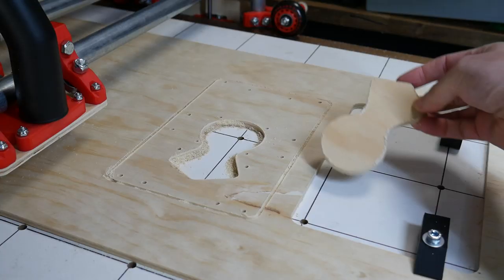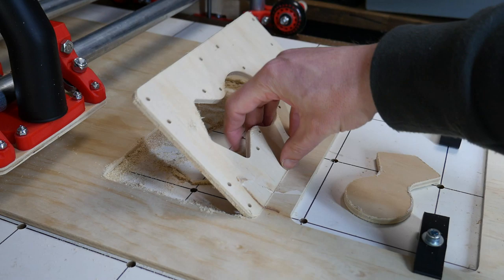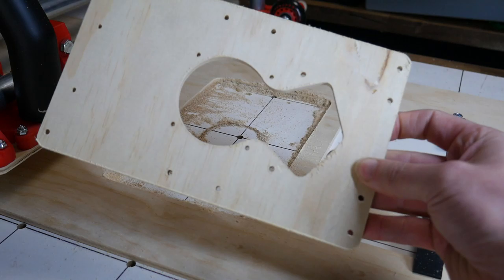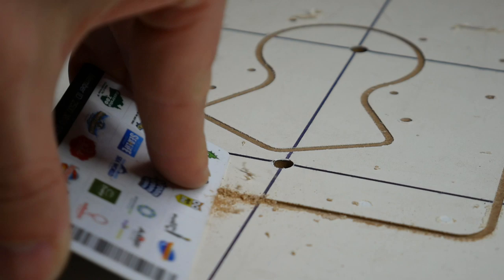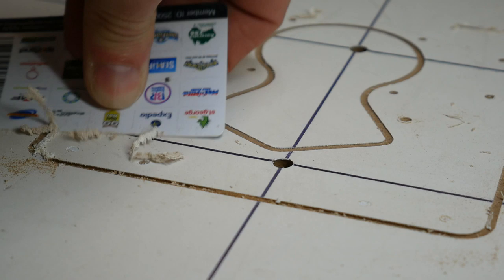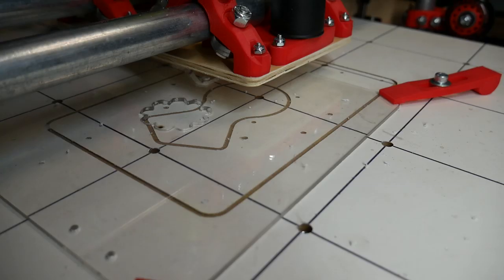When the job is finished we move the router out of the way and then we can lift up our part and see that it cut out perfectly. Chalk up another win for the lowrider 2 3D printed CNC. We can also see that when we cut a profile the whole way through the reason for the spoil board and it does get spoiled. I would recommend scraping off debris and vacuuming it up to leave a flat surface for future cutting jobs.